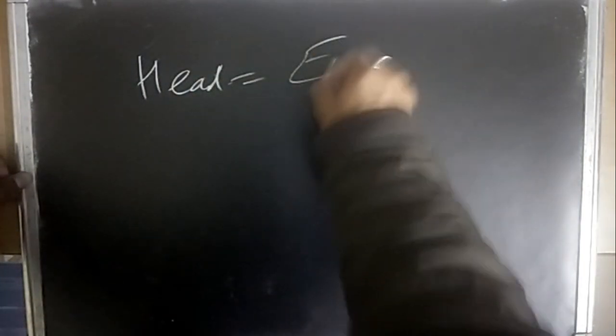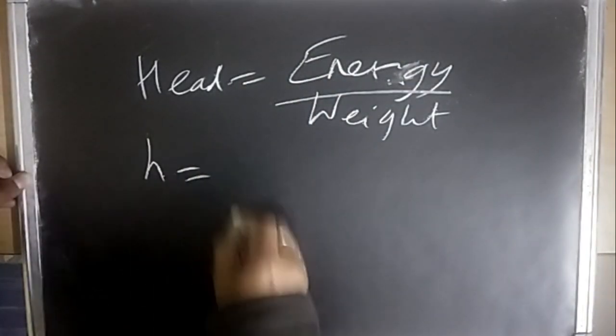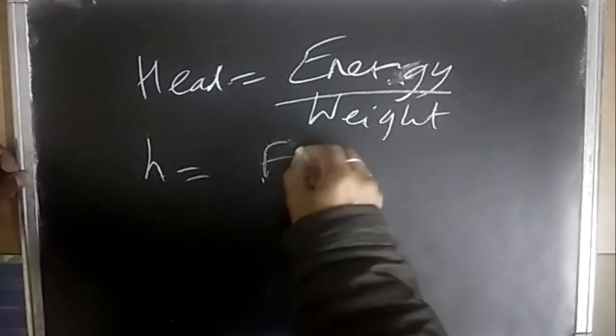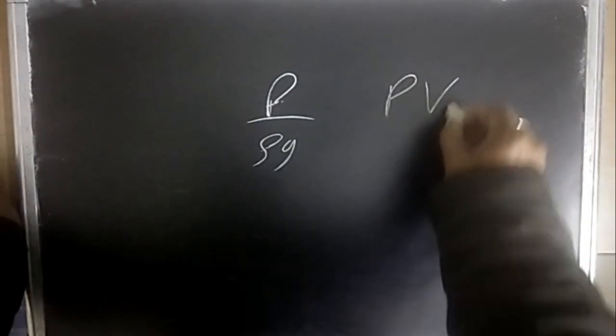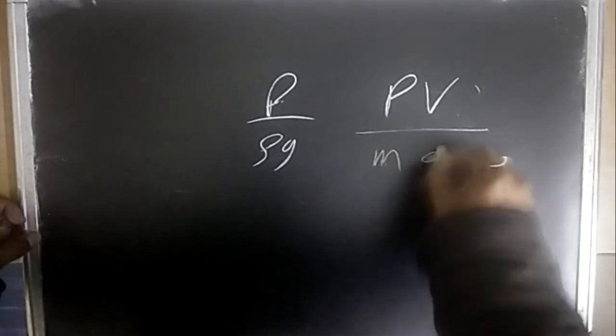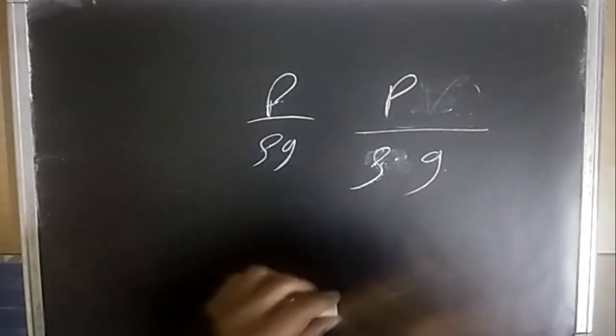Head is energy per unit weight, with units of meters. Pressure head = p/(ρg). This comes from: pressure × volume = energy, and dividing by weight (mg) gives volume/(mass) = 1/ρ, so pressure head = p/(ρg).